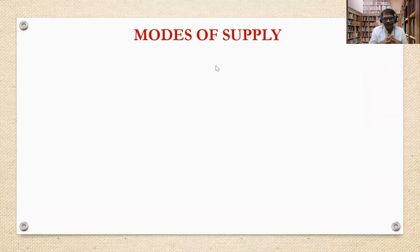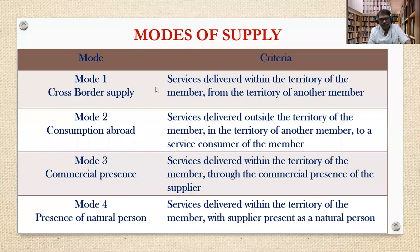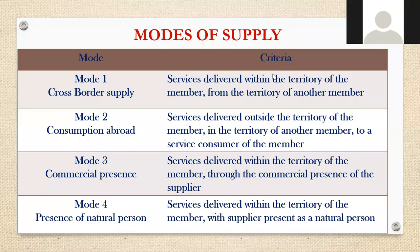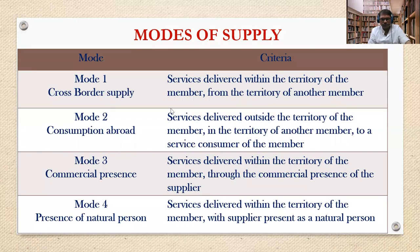This agreement, GATS, has helped developing countries like India. Yesterday we learned about the modes of supply — how services are supplied from one country to another. There are four modes. Mode 1 is cross-border supply, where services are sold from one country to another without leaving the territory. For example, India selling services to the US through online mode without crossing borders.